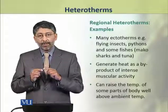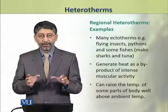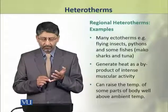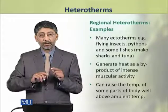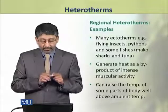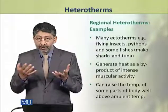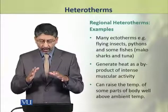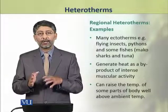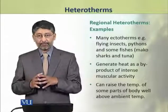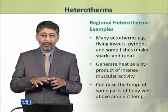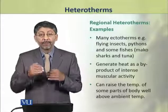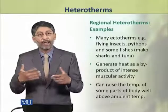We shall take a few examples of regional heterotherms, which include many ectotherms — for example flying insects; among the reptiles, some pythons; and some fishes, for example mako sharks and tuna — which generate heat as a byproduct of their muscular activity. As a result of this intense muscular activity, they can raise the temperature of some parts of their body well above the ambient temperatures.